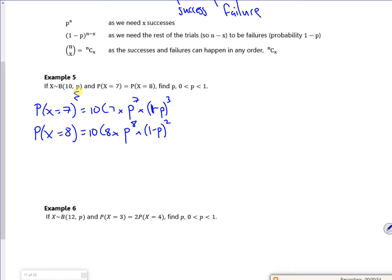So 10c7 is 120, I think. So I've got 120 P to the 7, 1 minus P to the 3. 10c8 apparently is 45. So 45 P to the 8, 1 minus P squared.